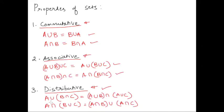Now let's see what distributive property is. There are two cases: one is A union (B intersection C), and the other is A intersection (B union C). Let's go case by case.